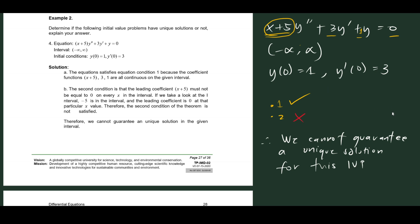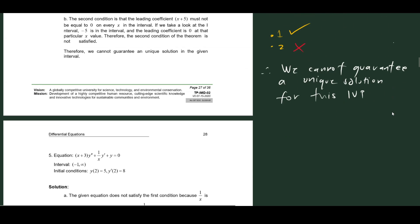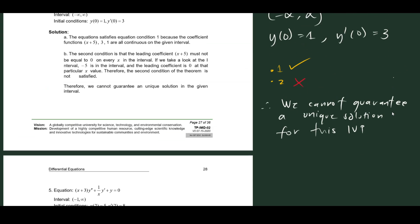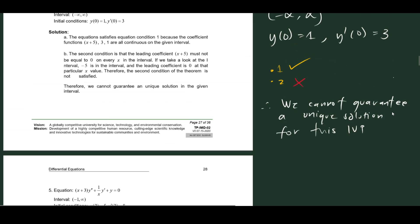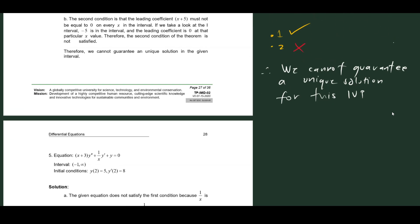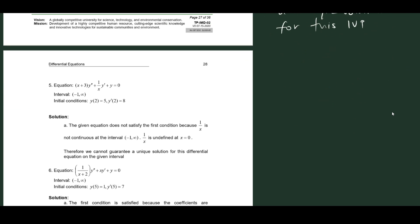You just have to check if all the conditions are met. If all conditions are met, you can conclude that there exists a unique solution satisfying the initial value problem. If even a single one is not satisfied, you cannot guarantee that there is a unique solution for the IVP.